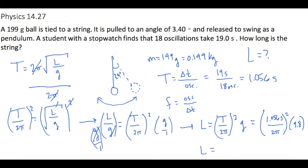So L equals 0.277. Now that's what comes out of the calculator in meters because that's standard units. But they want centimeters, so if we move the decimal place over 2 we get 27.7 centimeters as the length of the string.